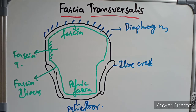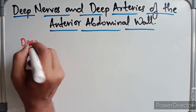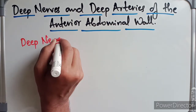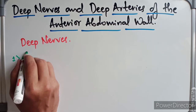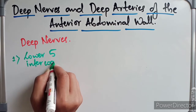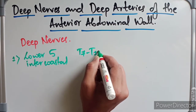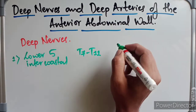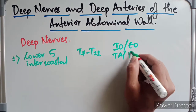Coming to the deep arteries and deep nerves of the anterior abdominal wall — firstly we will discuss about the deep nerves. The first deep nerve is the lower thoracic intercostals, with a root value of T7 to T11. They have motor branches to the internal oblique, external oblique, transversus abdominis, and rectus abdominis.